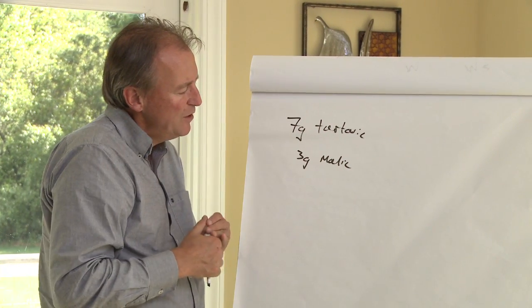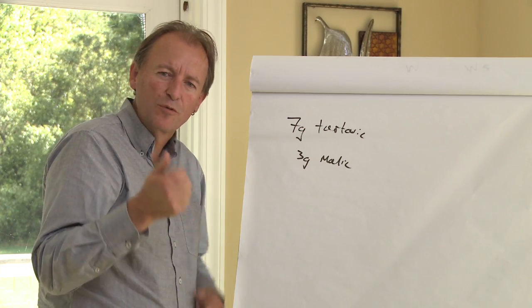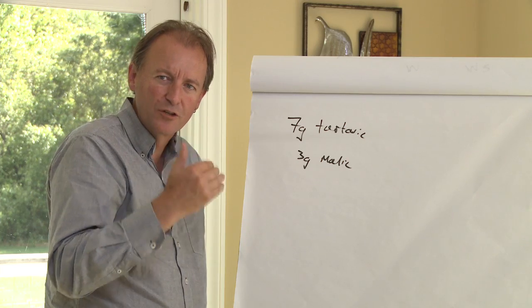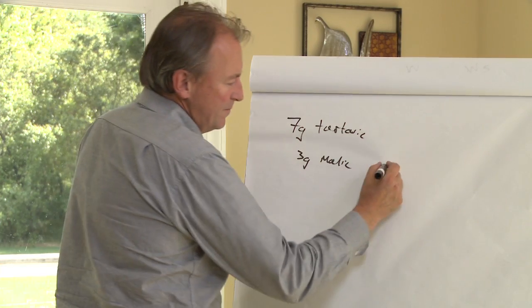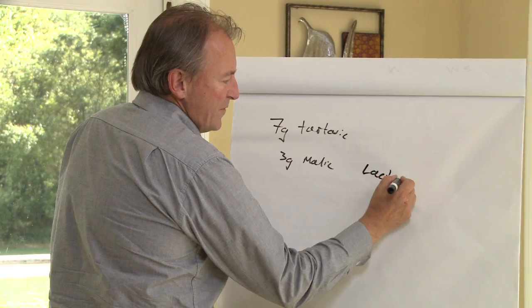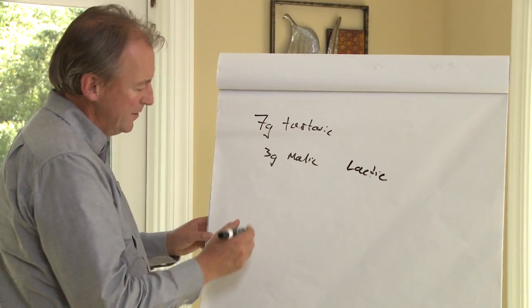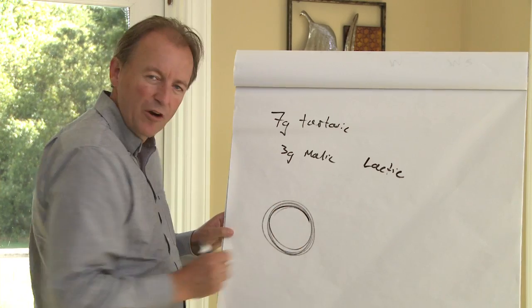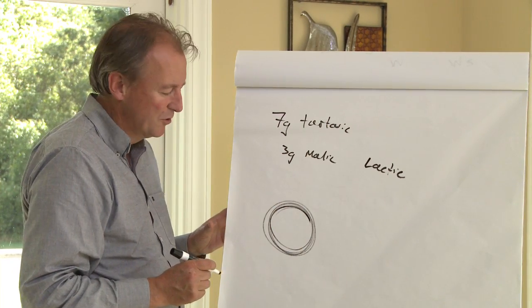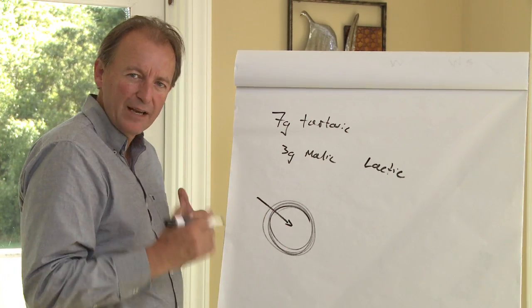But if we want to put this through malolactic fermentation, primary fermentation is converting sugar to alcohol, which we do with yeast, and then the conversion of malic acid to lactic acid is a conversion done with bacteria. This bacteria is introduced as the fermentation is going along quite nicely, and we introduce the bacteria that ferments malic acid to lactic.